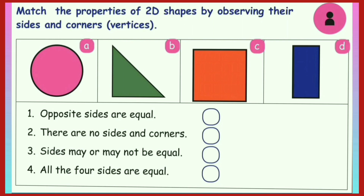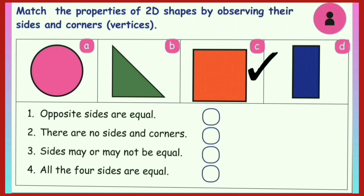Match the properties of 2D shapes by observing their sides and corners. First one: opposite sides are equal. The options are A - circle, which has no sides and no corners; B - triangle, which has 3 sides and sides may or may not be equal; C - square, which has 4 equal sides; D - rectangle, which has 4 sides and opposite sides are equal. So the first answer is D, rectangle.